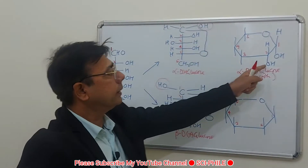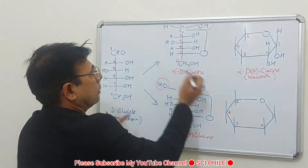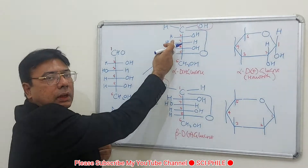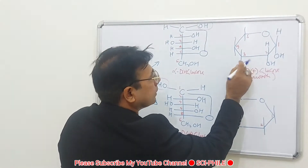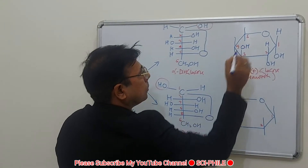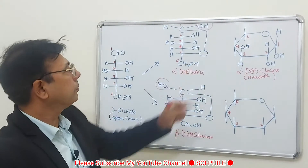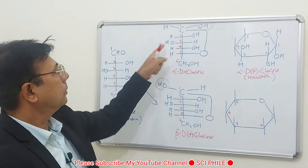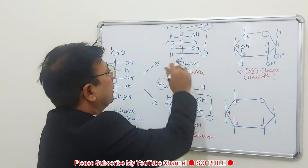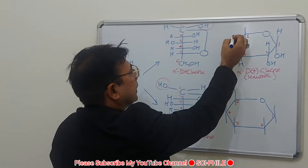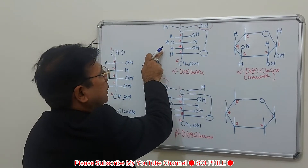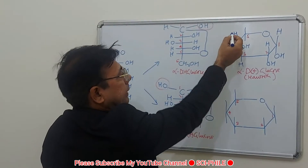On carbon 3, the orientation is opposite to that of carbon 2. Here OH is on the left in Fischer, so it is up in Haworth, and H is on the right, so it is down. On carbon 4, the group on the left in Fischer is on top in Haworth, and the group on the right is on the bottom.